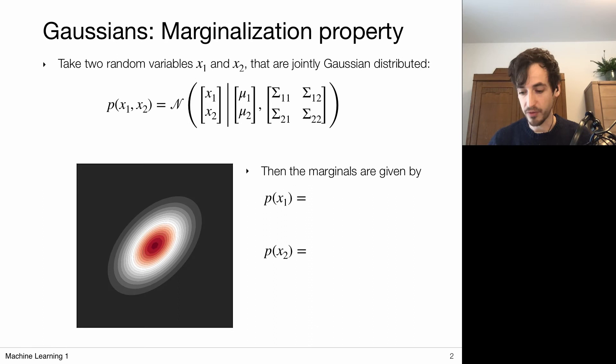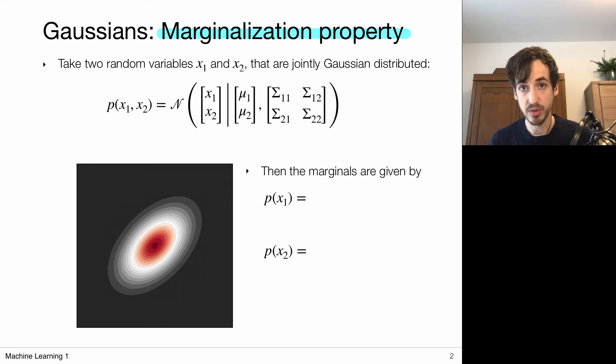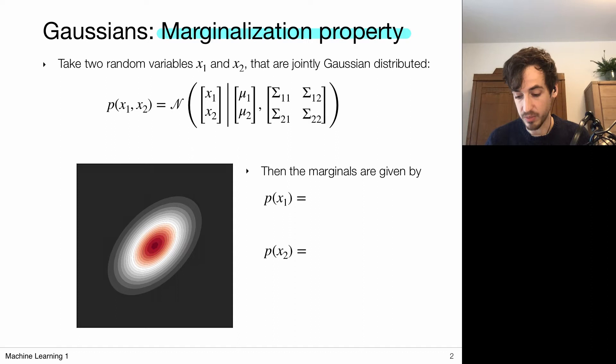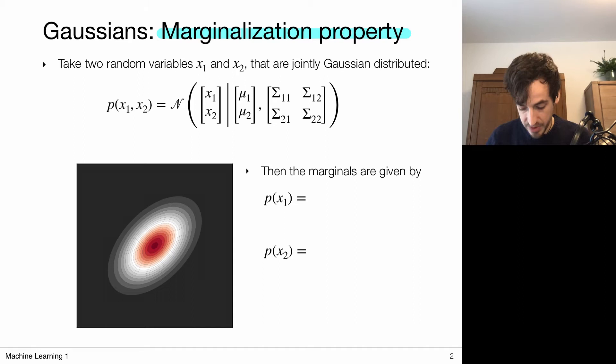One of the first properties that is very convenient to memorize is the marginalization property of Gaussians. The idea is that we say two random variables x1 and x2 are jointly Gaussian distributed if they are drawn from a multivariate Gaussian distribution. This multivariate Gaussian distribution has some mean vector and a covariance matrix and returns a new vector every time I sample it. Looking at the individual components — x1 and x2 — we see that these individual random variables are jointly Gaussian distributed.